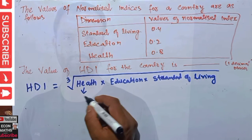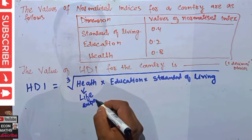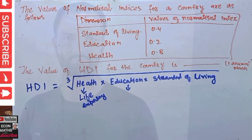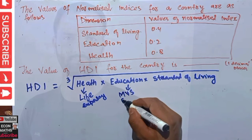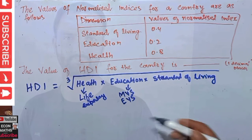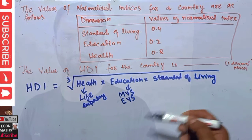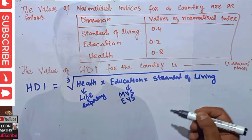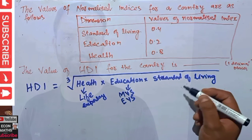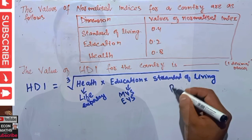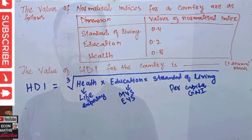For health, the proxy used is life expectancy. For education, we use mean years of schooling and expected years of schooling. All three indicators are given equal weightage, that is one-third each. For standard of living, we use per capita Gross National Income, that is per capita GNI, or per capita income.